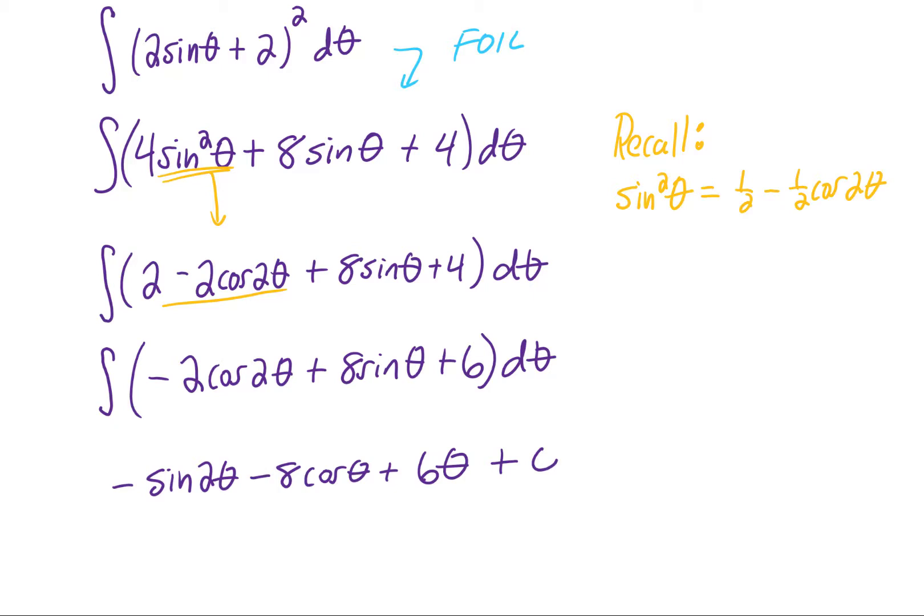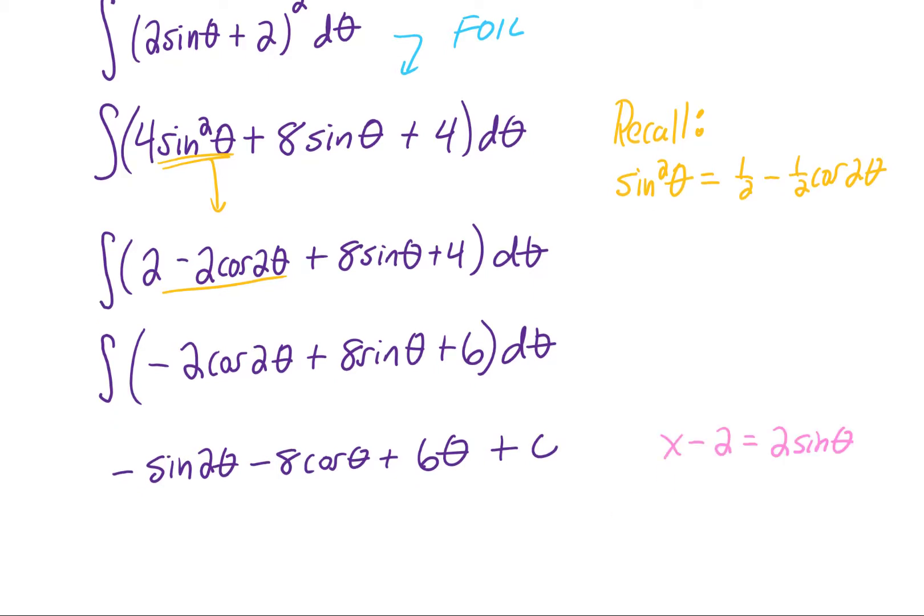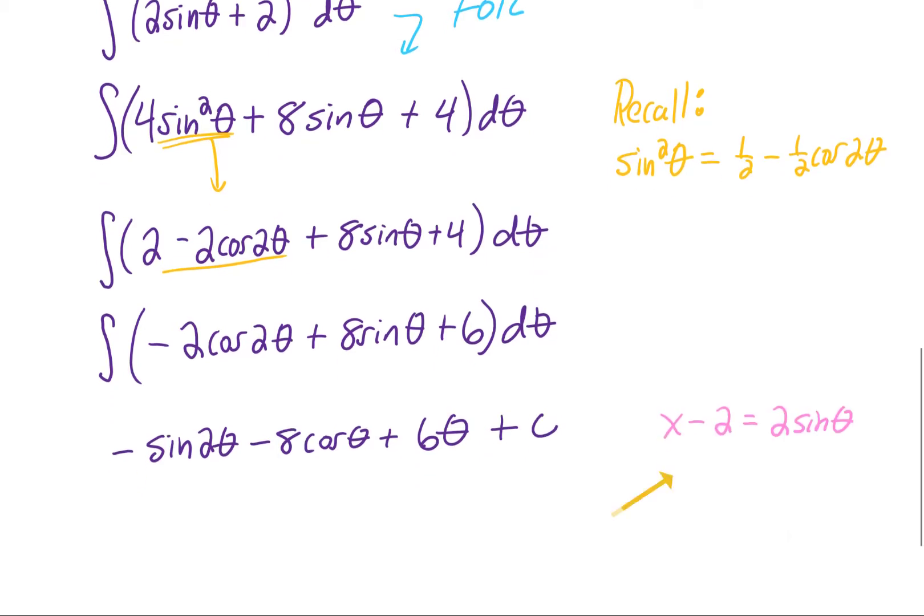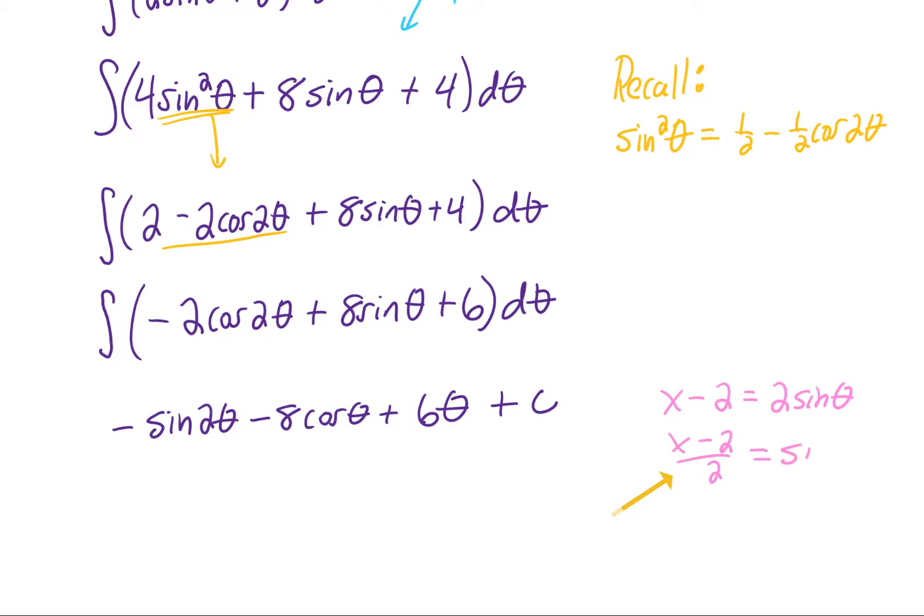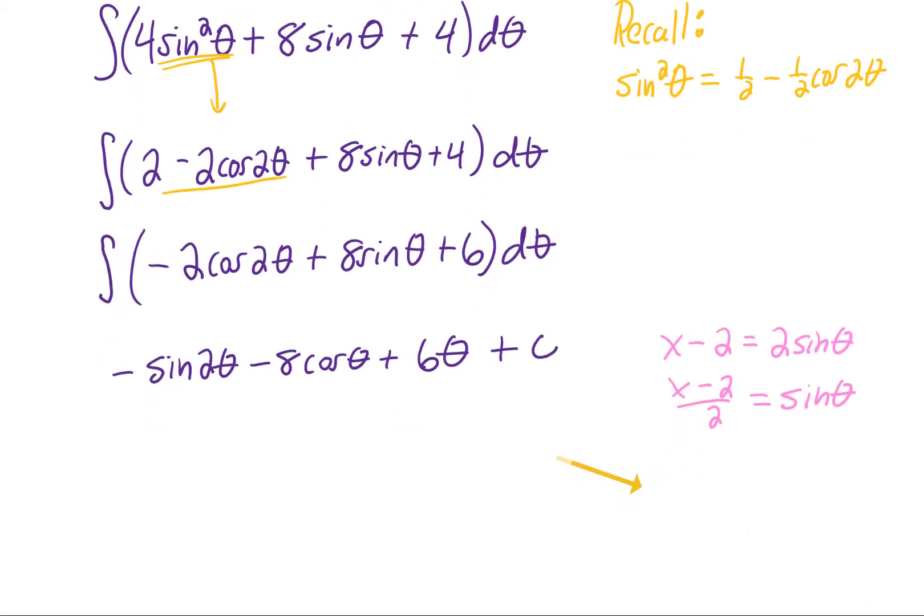So this is the answer to the problem, except we want our answer in terms of x. To get our answer in terms of x, we need to look back at the original substitution. Dividing it by 2 gets sine of theta by itself, and that allows us to draw ourselves a reference triangle.